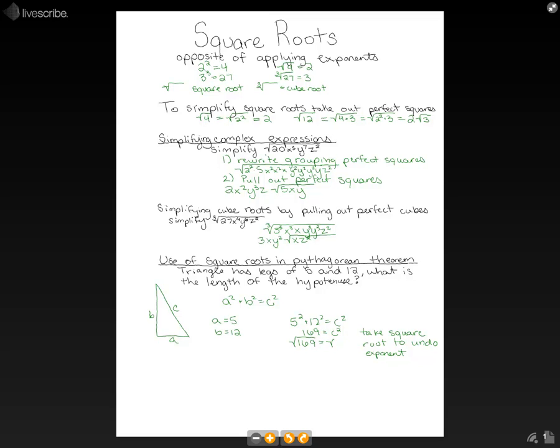And remember, if we do something on one side of our equation, we have to do it to the other. So we're going to take our square root of 169 as well. And when we carry that out, our square root of 169 is 13, and then we just get c on our other side.